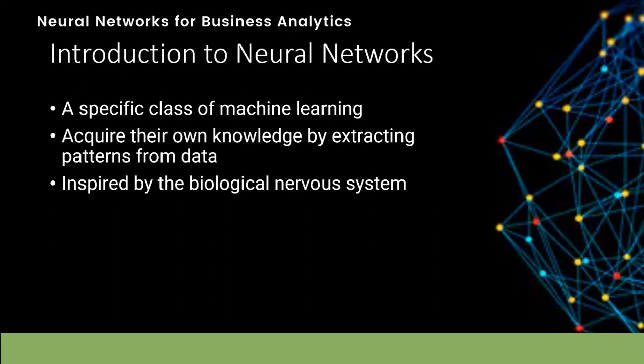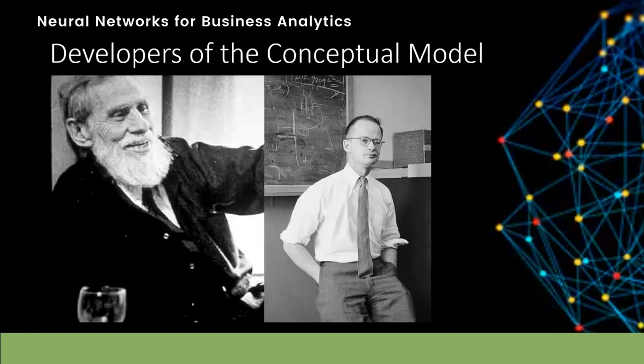Neurons have dendrites that receive inputs, and based on these inputs they produce an output through an axon to another neuron. The term neural network is derived from the work of neuroscientist Warren McCulloch and logician Walter Pitts, who developed the first conceptual model of an artificial neural network. In their work, they described the concept of a neuron — a single cell living in a network of cells that receives inputs, processes them, and generates an output.